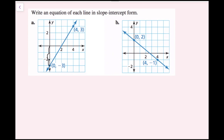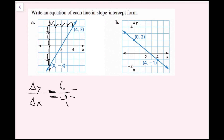Counting up the vertical units, I went up 6 units, so my change in y is positive 6. Then counting horizontal units, I went over 4 to the right, so that's positive 4. If I went to the left it'd be negative; if I went down it'd be negative. So I get 6 over 4, which I need to simplify to get my slope of 3 over 2.